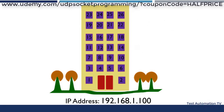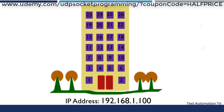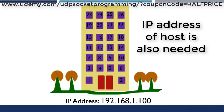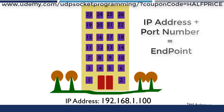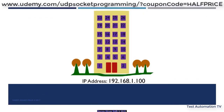When we need to send data to a specific thread or process, we need to know which port number is being used by it. We also need to know the IP address of the PC on which the thread or process is running. The combination of an IP address and a port number is known as an endpoint. A few examples are shown on the screen.